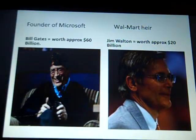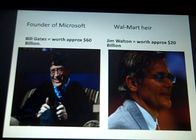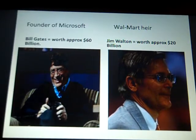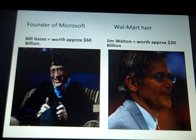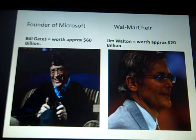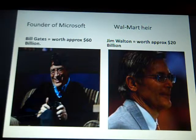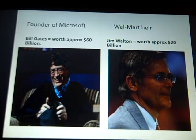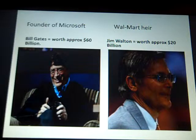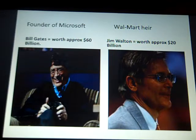For examples of people in the upper class: Bill Gates was worth $60 billion as of a few years ago. Jim Walton, of Walmart, was worth approximately $20 billion — those numbers have probably gone up. His children now own Walmart and are worth a great deal as well.